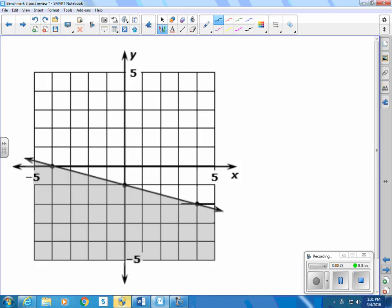If it were a line, we would say the line is y equals negative 1 over 4 times x minus 1. And because it's an inequality, we would say y is less than or equal to negative 1 over 4 times x minus 1.